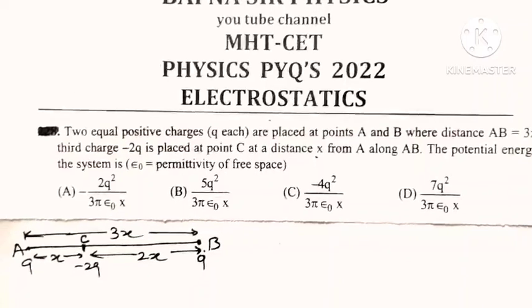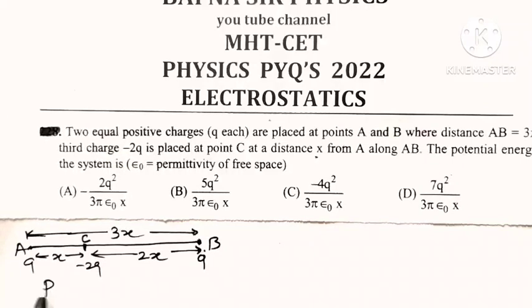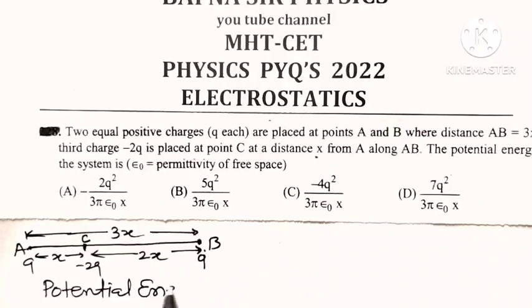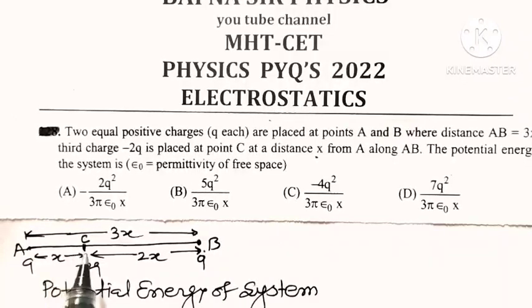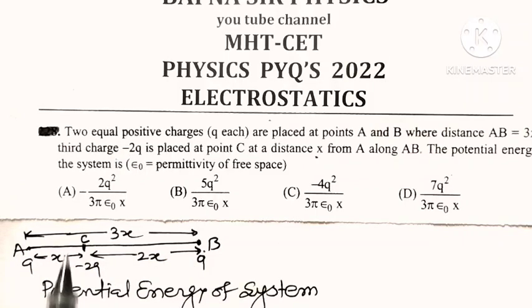Here we have a system of three charges and we want to find the potential energy of the system. We find the potential energy of each pair: charge Q and minus 2Q, then Q and Q, then minus 2Q and Q.